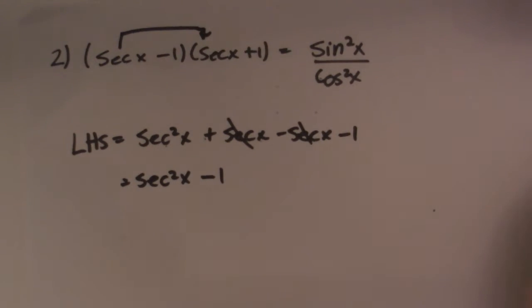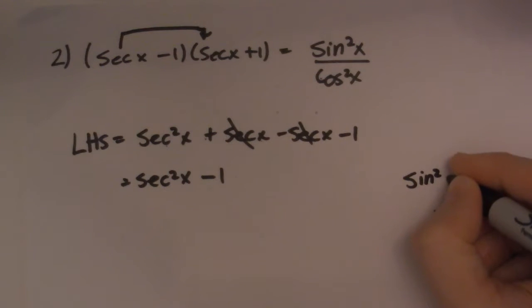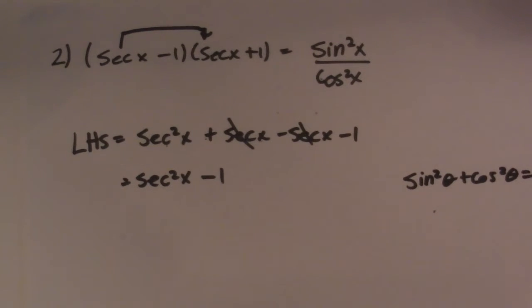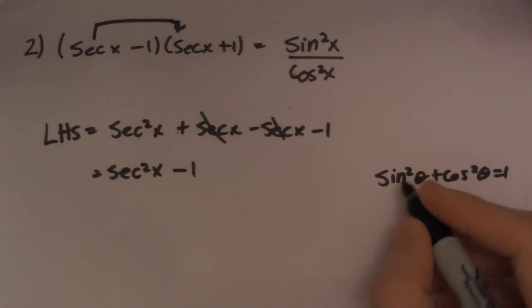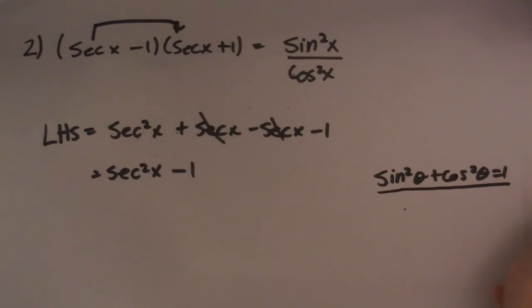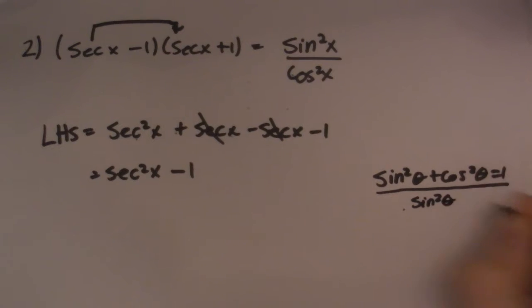So now, we have to remember that Pythagorean identity comes in three different forms or flavors, whatever you want to call it. So this is the first form right here. You can see it. The second form is when I divide everything in this guy by sine squared. Let's go by sine squared theta first.